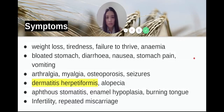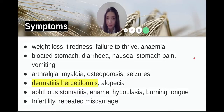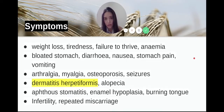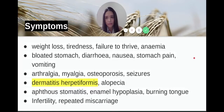Dermatitis herpetiformis is a rash — if you look it up, it's the celiac rash. If you have that and you've been diagnosed by a dermatologist, that means you have celiac disease. You don't actually have to go through the entire diagnostic process. You still need to be seen by a gastroenterologist to follow up on your gut problems, but if you have that rash, it's likely you have celiac disease — it's actually considered one of the diagnostic criteria.